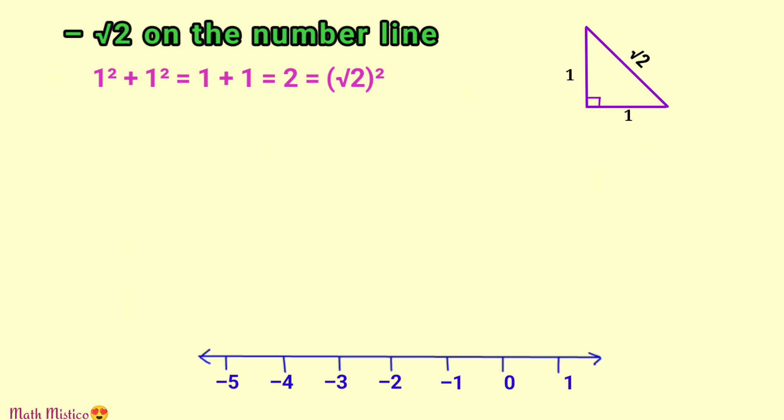Can you tell what is the distance of any point on the number line from the origin? This distance is given by the absolute value of the point located there. Like the distance of minus 1 from origin will be the absolute value of minus 1, which is 1. So going one unit from origin to the left side, we reach the point minus 1.